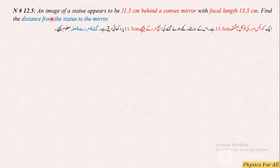Bismillahirrahmanirrahim, numerical number 12.5. An image of a statue appears to be 11.5 cm behind a convex mirror with a focal length of 13.5 cm. Find the distance from the statue to the mirror. Ek statue hai, ek mujassama hai, aur is mujassame ka jo image hai woh mirror se 11.5 cm peeche banti hai, behind the mirror.